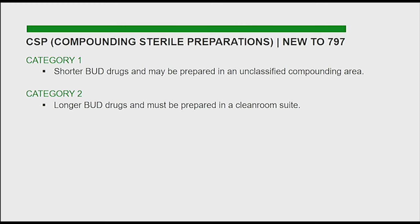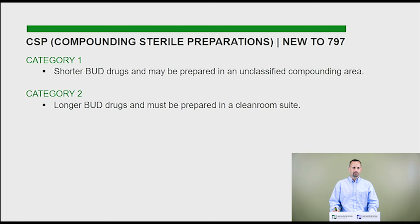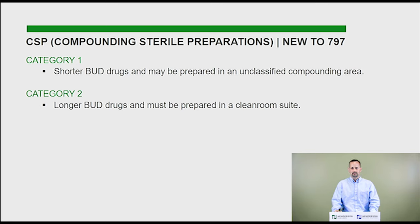One thing that's new to USP 797 is how they classify drugs. There used to be three different classifications — low, medium, and high risk — and they simplified it into two different classifications. These classifications refer to BUDs, which is Beyond Use Date — how long after sterile drugs are compounded they have to be used. This is really important because you need to understand what category of drugs the facility will be designing for. In smaller outpatient oncology centers they may just need category one, where the drug is used immediately. Other hospitals that need to prepare a drug and have it sit on a shelf will need a longer beyond use date.